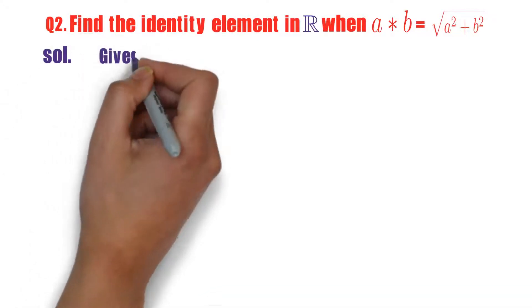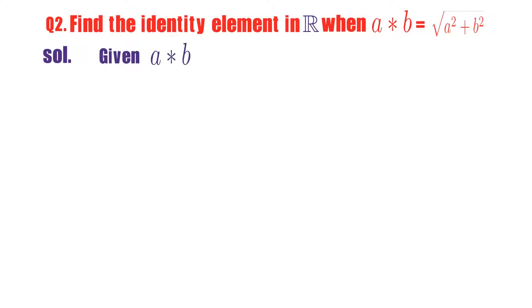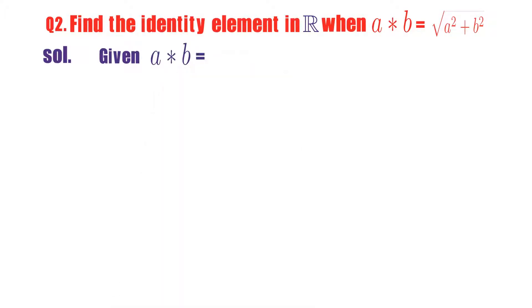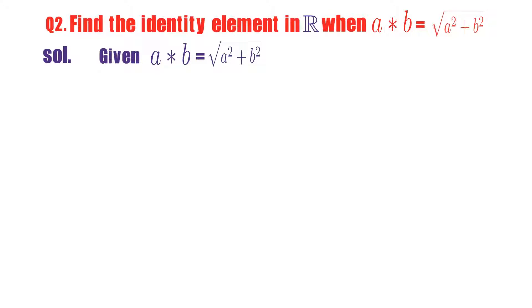Okay, what they given? They given that a star b equals to root over a square plus b square.